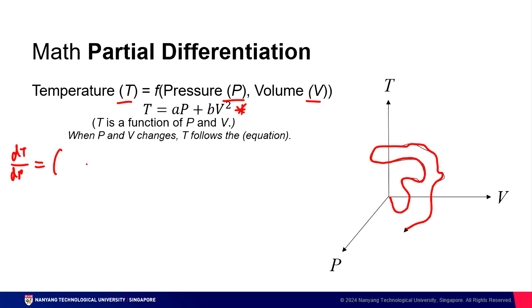I'm going to introduce you now to a new operator, something known as partial. Partial T over partial P literally just tells me that you're keeping one variable constant. And in this case, it's volume. So when you keep volume constant, you can ignore BV squared, and all you have to do is differentiate AP, and the result of that differential is A, keeping volume constant.